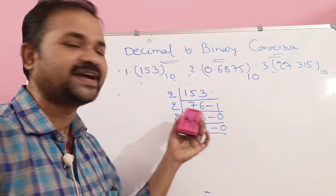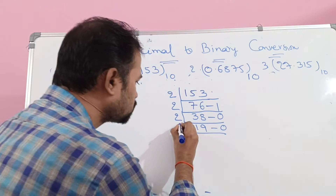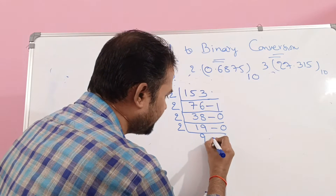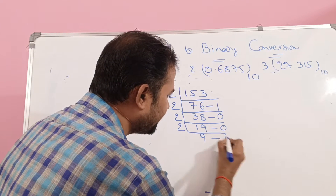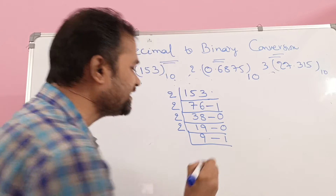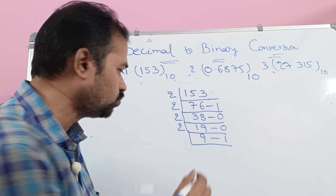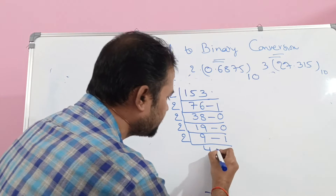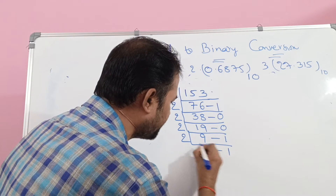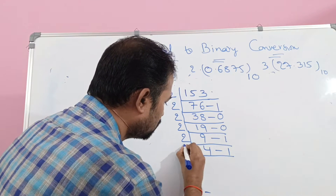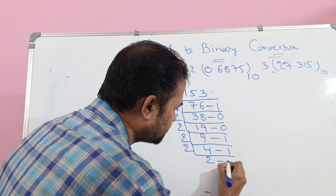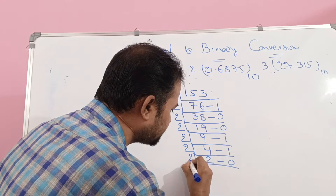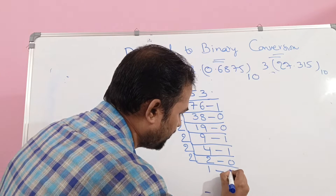Again divide 19 by 2: 2 times 9 is 18, so quotient is 9 and remainder is 1. Next, again divide 9 by 2: 2 times 4 is 8, so 4 is the quotient and 1 is the remainder. Next, 2 times 2 is 4, so quotient is 2 and remainder is 0. Next, 2 times 1 is 2, so quotient is 1 and remainder is 0.